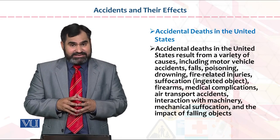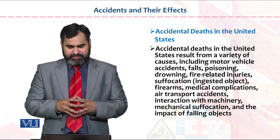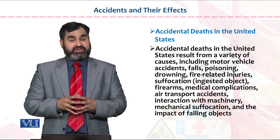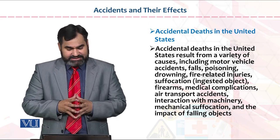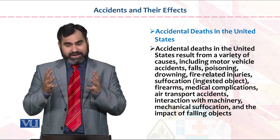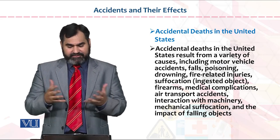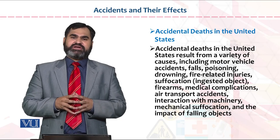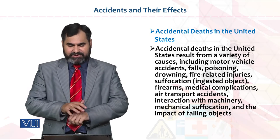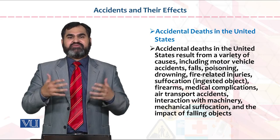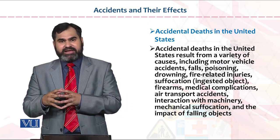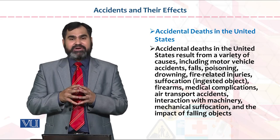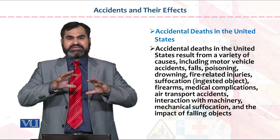Accidental deaths in the United States of America arise from a variety of causes, which include motor vehicle accidents, falls, poisoning, drowning, and fire-related injuries. These are various examples listed here. The primary purpose of discussing these is to understand the different types of deaths that have occurred in the United States and to identify which of these occurred within organizational settings.